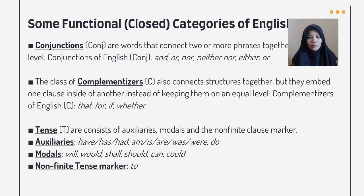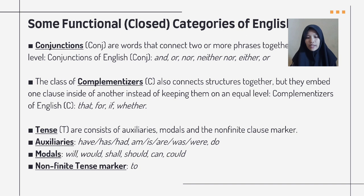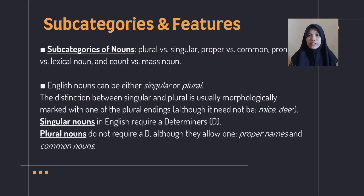Conjunctions (Con) are words that connect two or more phrases together on an equal level. Conjunctions of English include: 'and,' 'or,' 'nor,' 'neither...nor,' 'either...or.' The class of complementizers (C) also connect structures together, but they embed one clause inside of another instead of keeping them on an equal level. Complementizer types of English include: 'that,' 'for,' 'if,' 'whether.' Tense (T) consists of auxiliaries, modals, and the nonfinite clause marker. Auxiliaries include: 'have,' 'has,' 'had,' 'am,' 'is,' 'are,' 'was,' 'were,' 'do.' Modals include: 'will,' 'would,' 'shall,' 'should,' 'can,' 'could.' The nonfinite tense marker is 'to.'